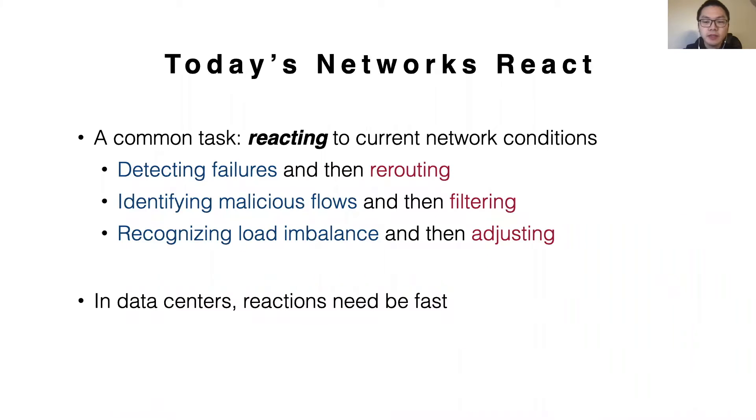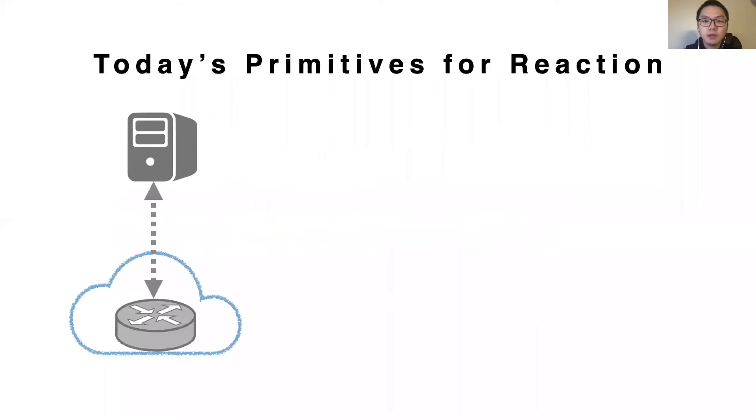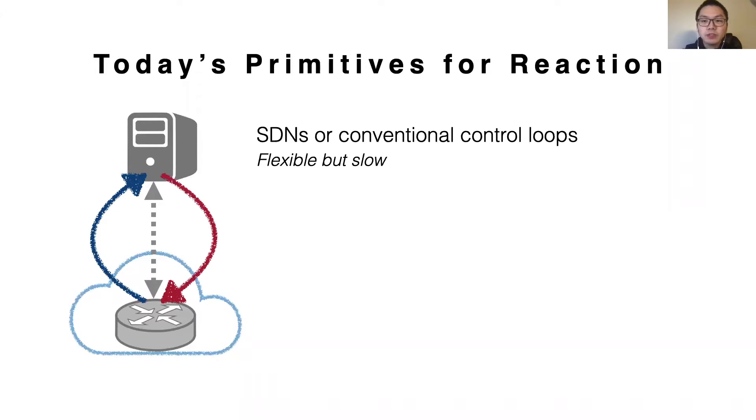In data centers, these reactions need to be fast, often sub-RTT level. Today, there are a few ways to implement these reactive behaviors. Traditionally, one could leverage the control plane, for example SDNs or conventional control loops, which can measure the network and reconfigure it dynamically. These approaches are flexible, but typically slow and often orders of magnitude slower to capture transient network events.